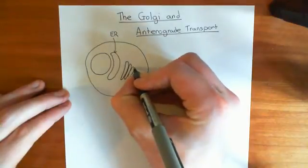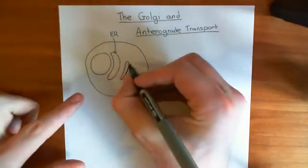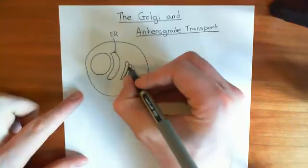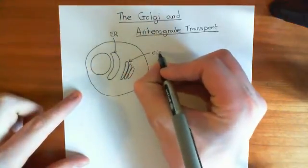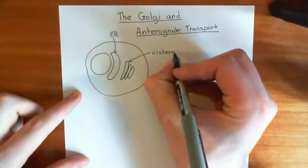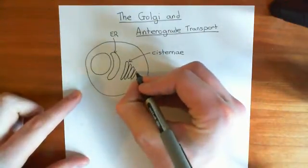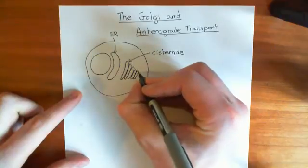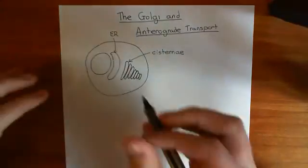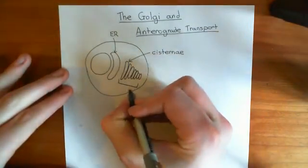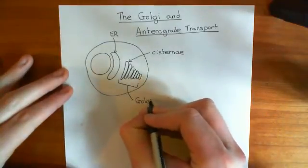The Golgi basically consists of loads of compartments stacked on top of each other — membrane-bound compartments. The fancy name for these massive membrane-bound compartments is a cisterna, or the plural is cisternae. Often you'll have around seven cisternae stacked on top of each other. This whole structure with these seven cisternae stacked on top of each other is the Golgi apparatus.